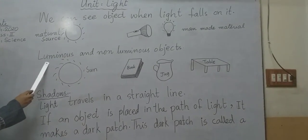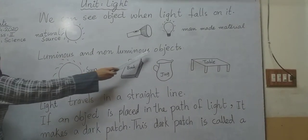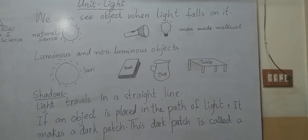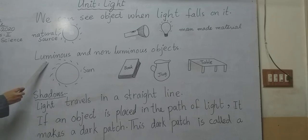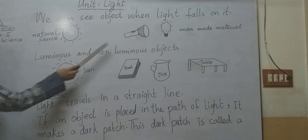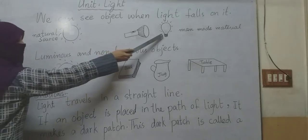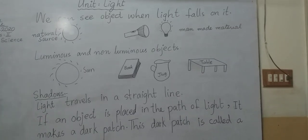Next topic is luminous and non-luminous objects. What is the definition of luminous objects? Some objects give out their own light - that is called luminous. Like the sun, like a torch, like a bulb, like a saber, like a tube light, like a candle.